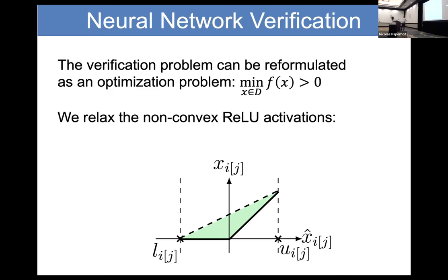There are three cases: first, if both the lower and upper bound are negative, the output of the ReLU is just zero — easy to solve. Second, if both are positive, it's basically just the identity function — again easy. The difficulty arises when the lower bound is negative and the upper bound is positive, as shown here, because then the relaxation changes the problem.